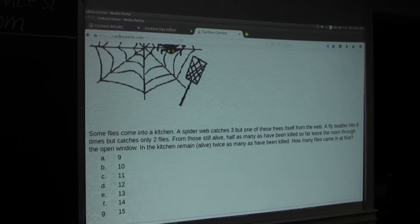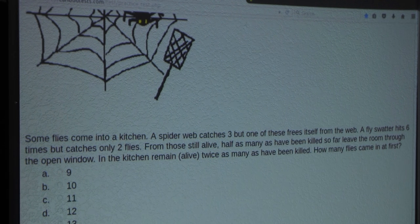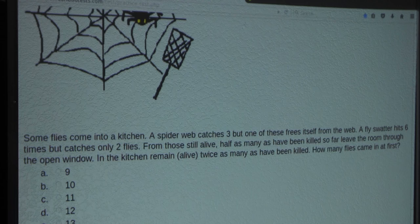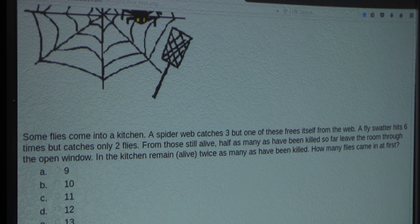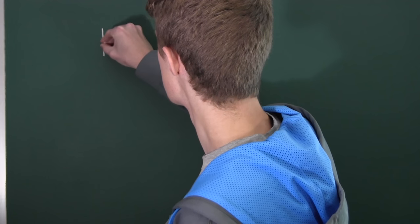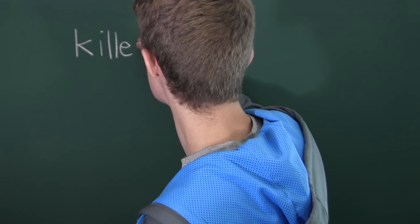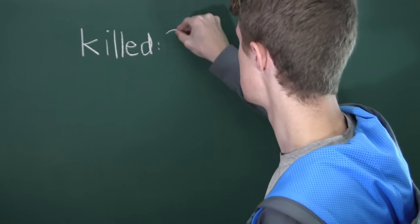Let's start with the first sentence. It says some flies come into a kitchen. Then it says a spider web catches three, but one of these three frees itself from the web. Well, three minus one means that two of those flies ended up dying. So three minus one is two.